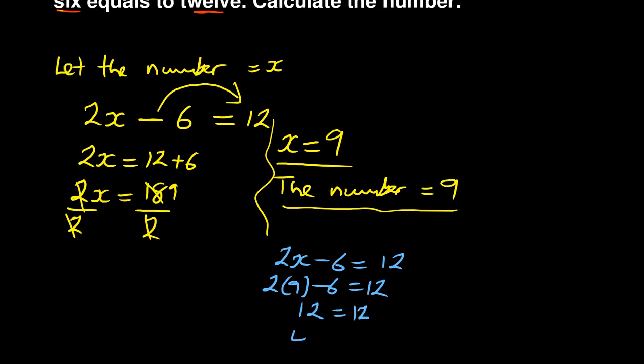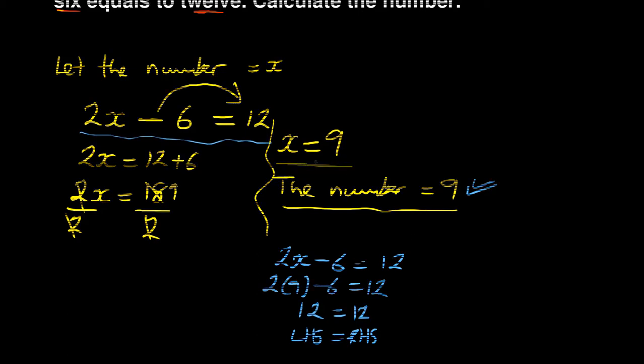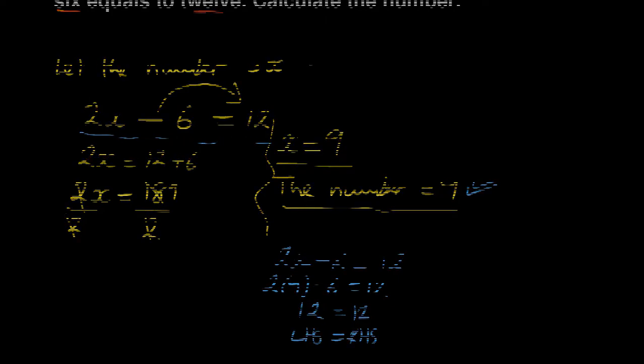So which means our left-hand side is equal to our right-hand side. It means our solving of the equation is correct—not that the answer is correct, but the way you solved this particular linear equation is correct. This is how you could have approached such, and it is equal to four marks that you can benefit from in your exam. I hope this was beneficial to you. See you next time.